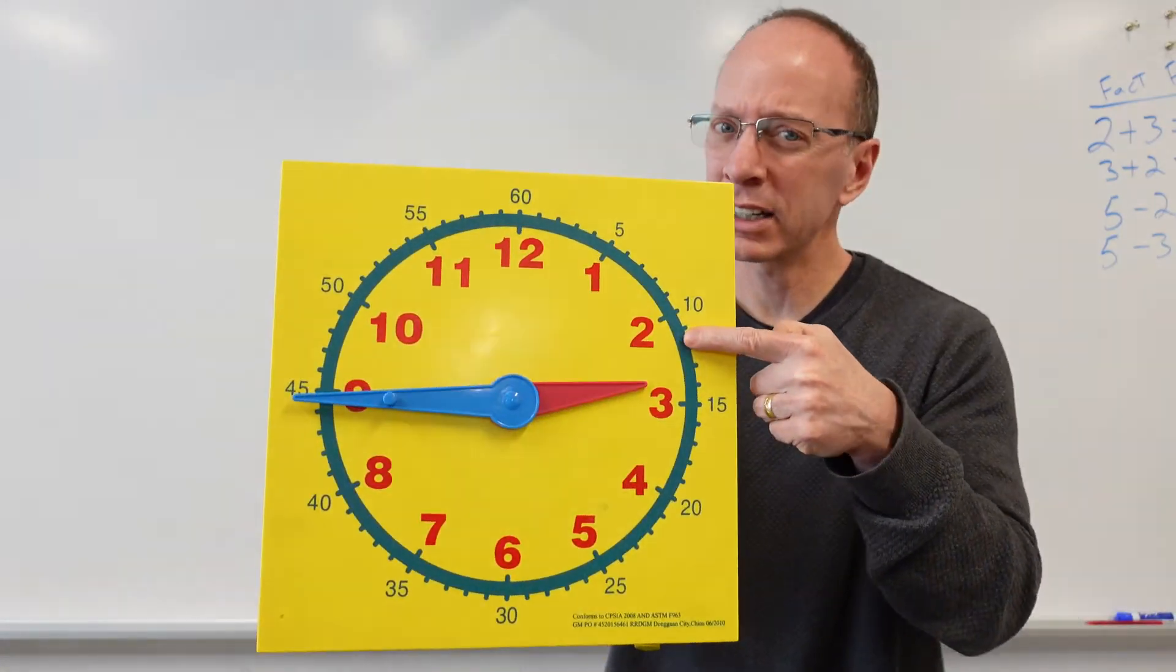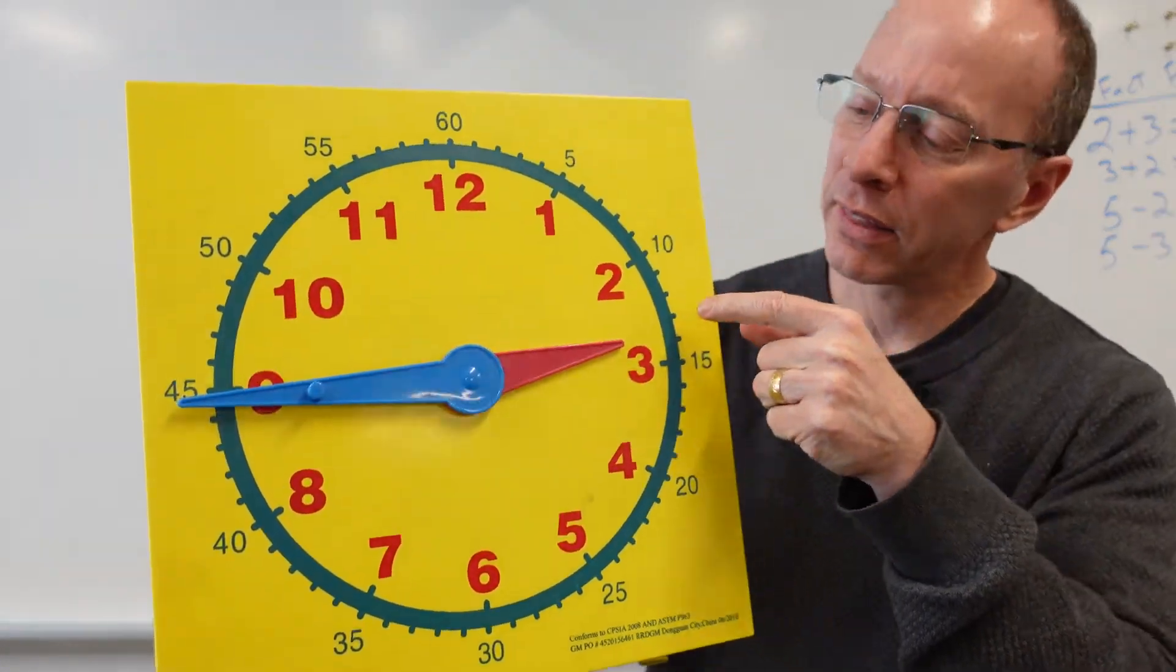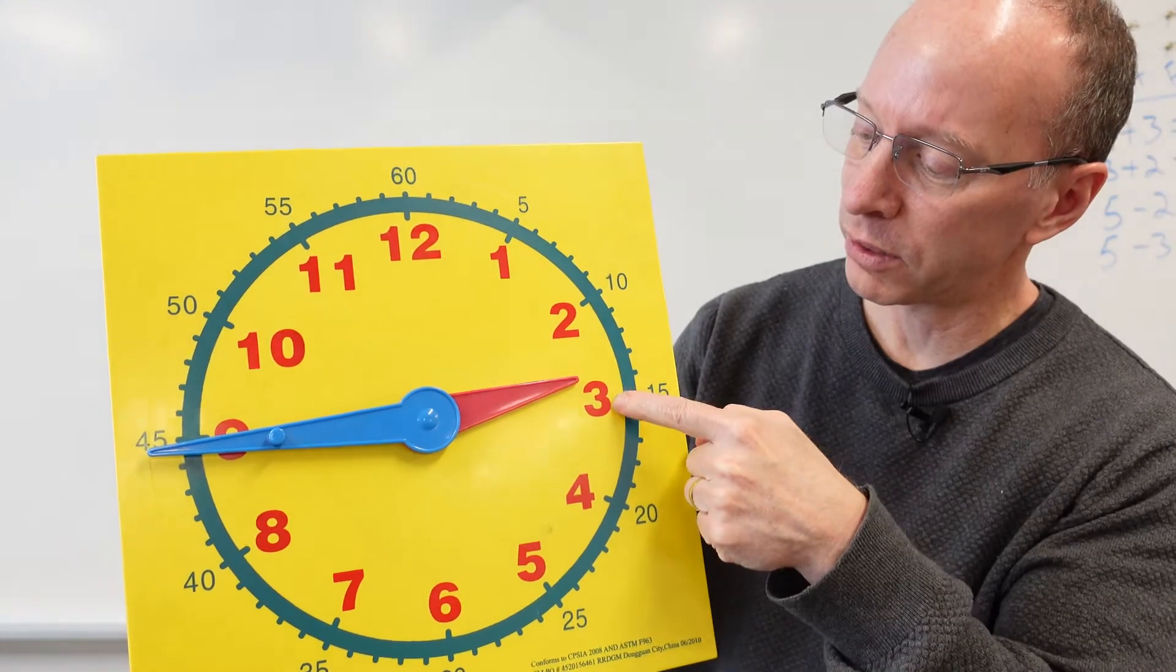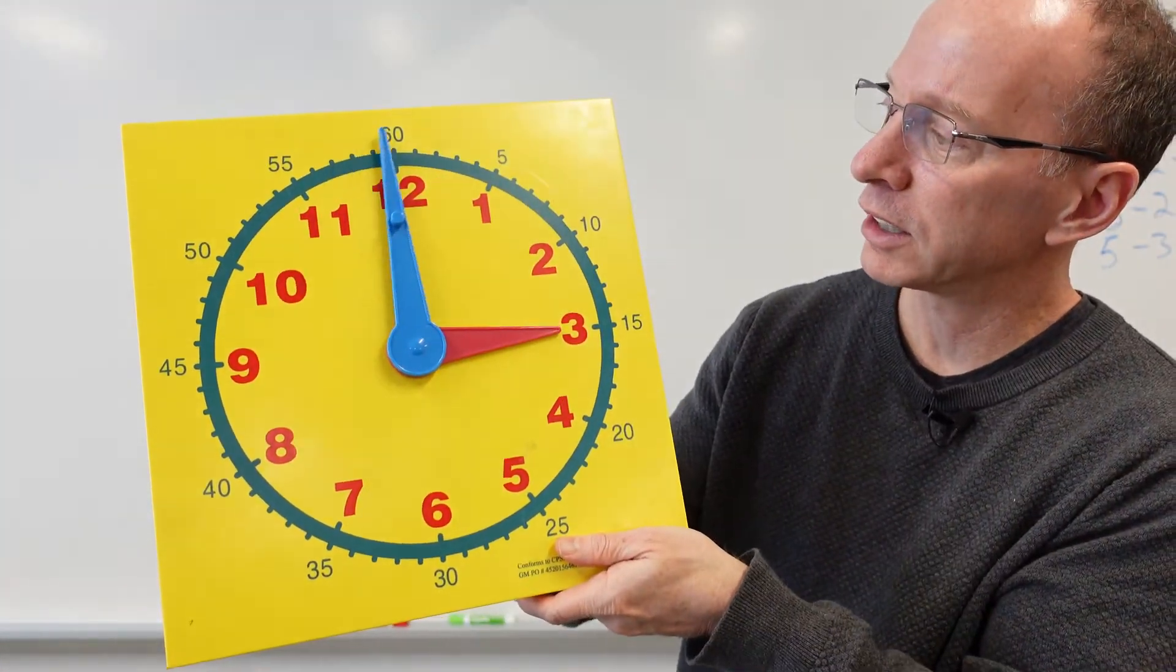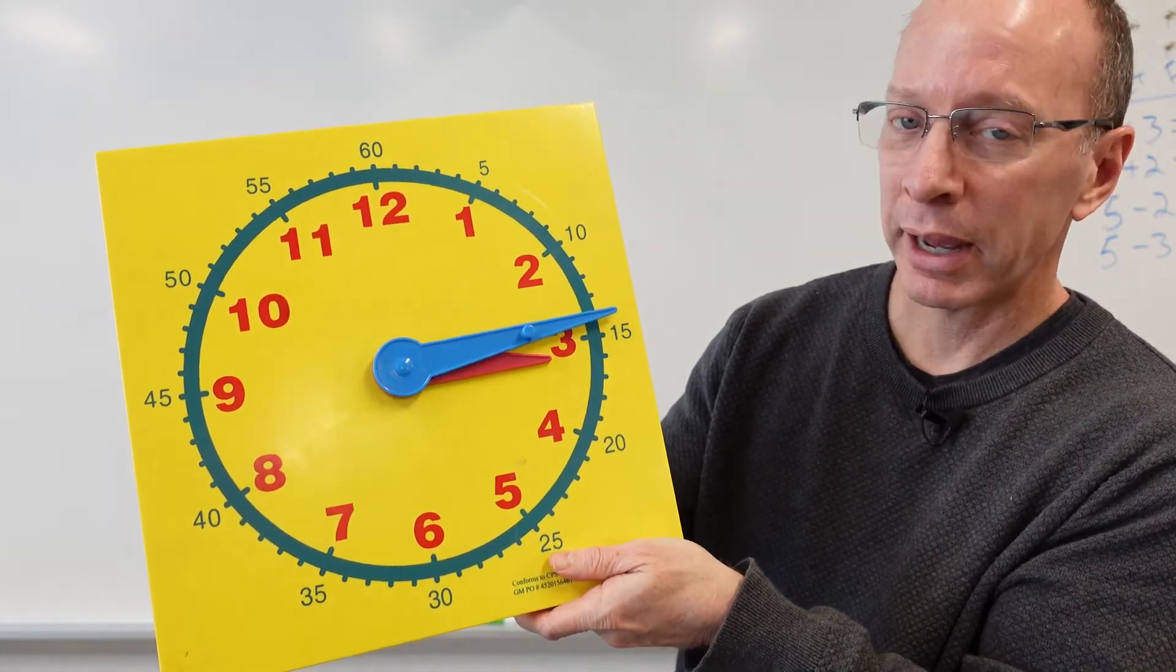Now, right here, this can get a little confusing. This right here, between the 2 and the 3, it's not quite past the 3 yet. Okay? I'll show you when it's past the 3. See, it's still 3, and now it's past the 3.